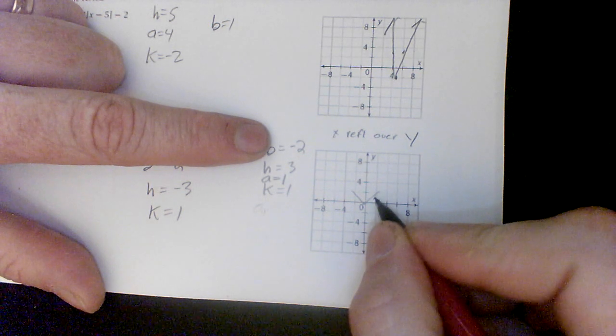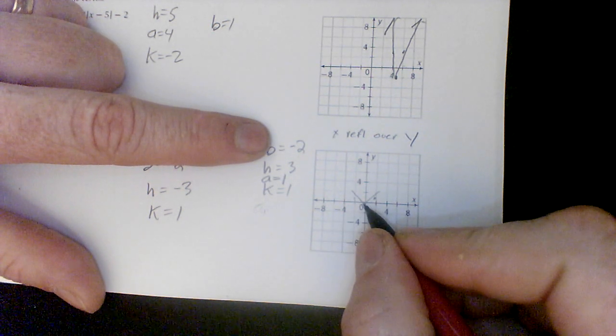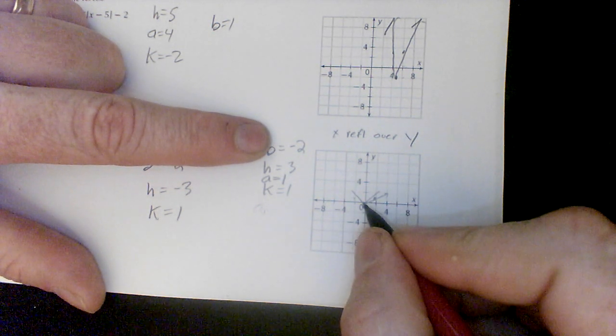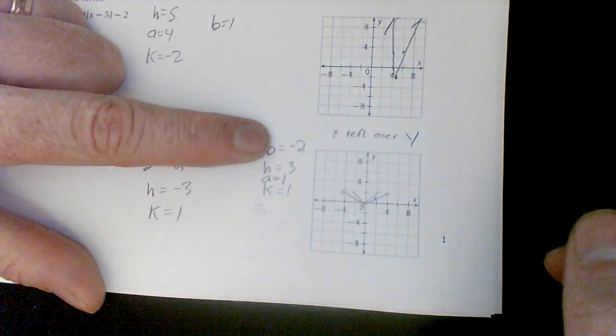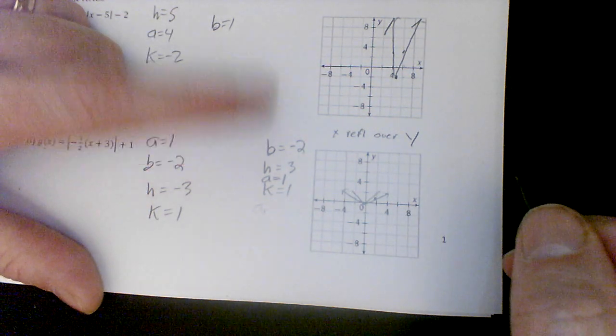So instead of going over 1 and up 1, I go over 2 and up 1. So my points would be there, and it would be horizontally stretched. I'm not going to draw the whole thing, but I'm going to give you a concept of it.